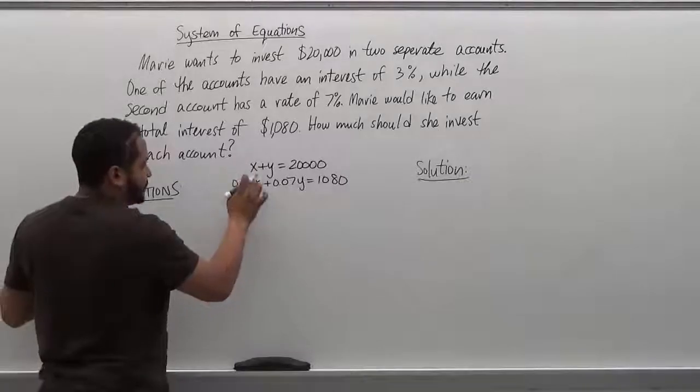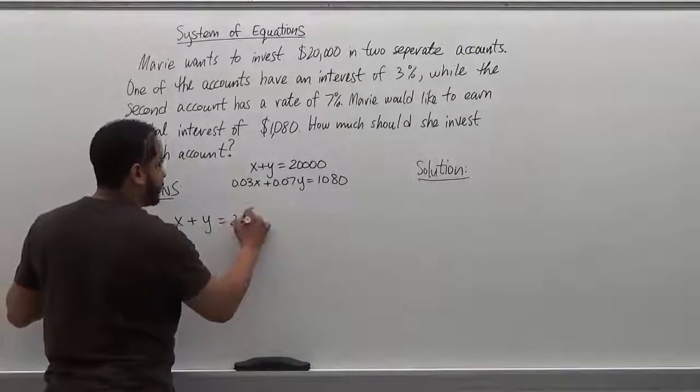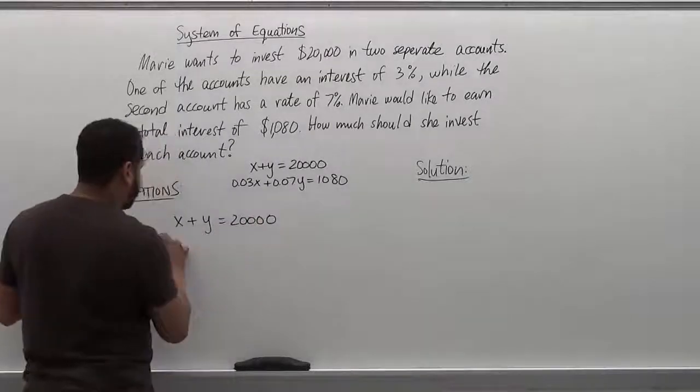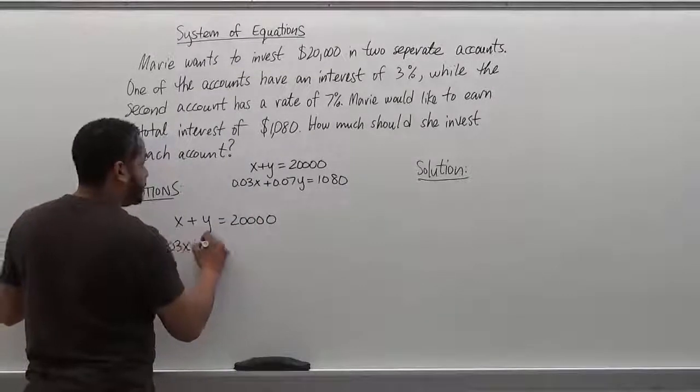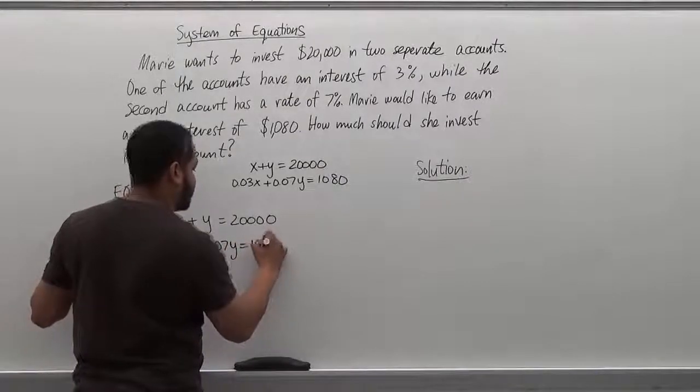Keeping that in mind, let's begin by transforming the two terms and augmenting our system. So we have x plus y equals $20,000. And we have 0.03x plus 0.07y equals $1,080.